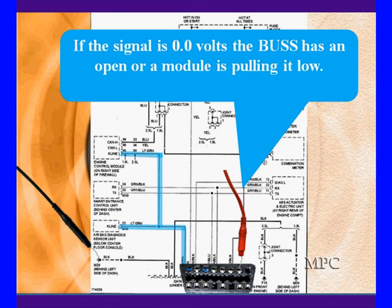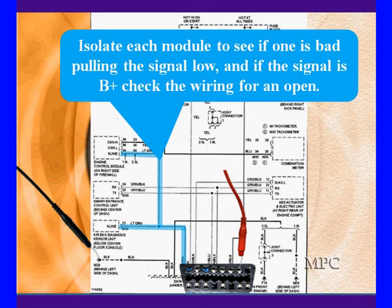Let's talk about the options. If the signal is zero, the bus hasn't opened, or a module is pulling it low. A module goes low — pulls it low to be dominant. If it dies and shorts out, it'll pull low and nobody will be able to talk. Isolate each module. If you see one is pulling the signal low, you've found the problem. Diagnose, replace, and reprogram that module.